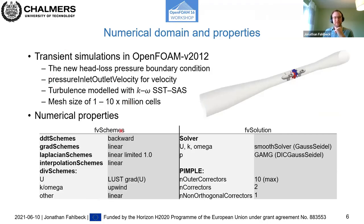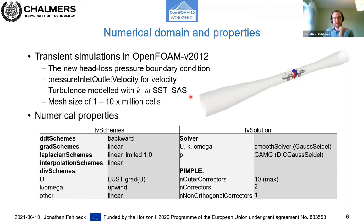For an inflow case the pressure at the patch decreases due to upstream losses, and for an outflow case the pressure increases since losses are downstream. This boundary condition is developed only for kinematic pressure, i.e., incompressible flow. The numerical domain includes two runners — the upstream runner in red and downstream runner in blue — rotating in opposite directions. The new head loss pressure boundary condition is applied at both inlet and outlet.